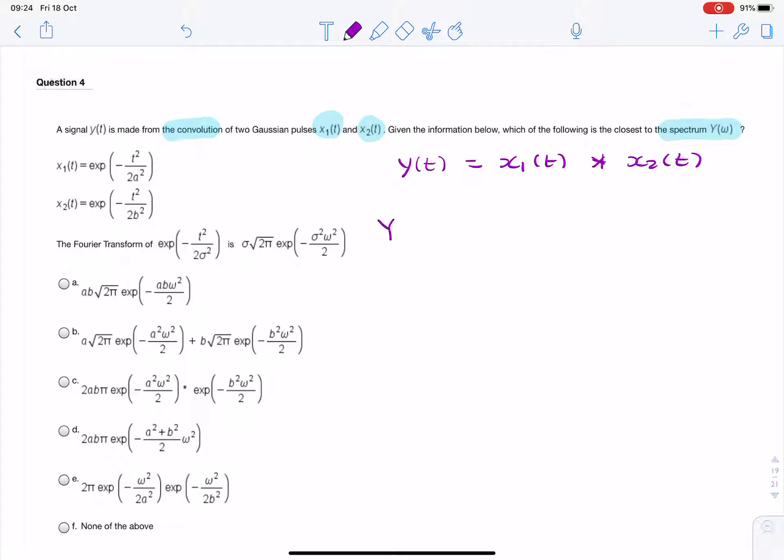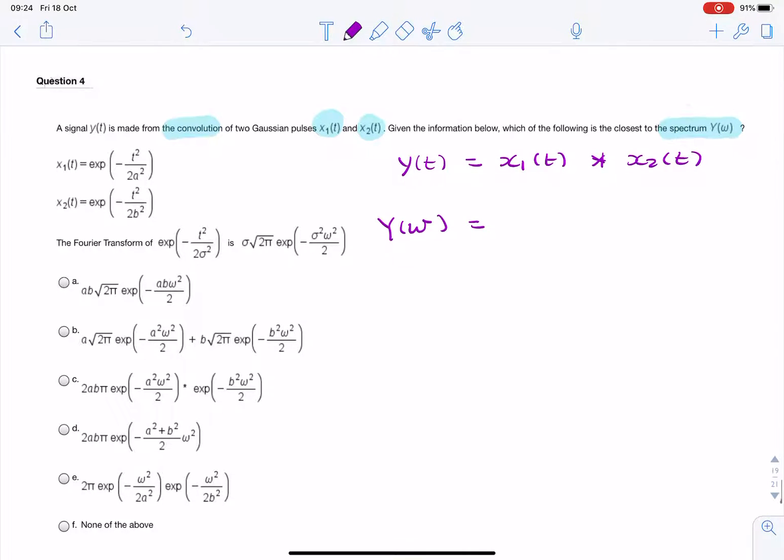then the spectrum, y of omega, won't be the convolution of the two spectra. It will be the product of the two spectra. So that's the convolution property. The convolution turns into a multiplication.